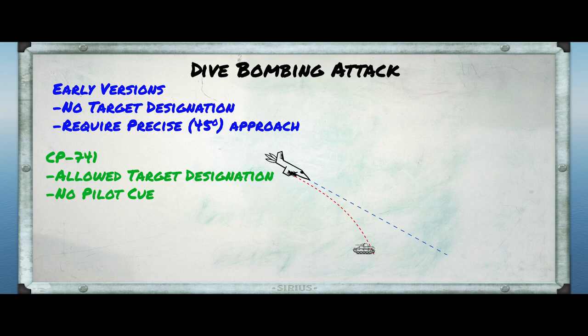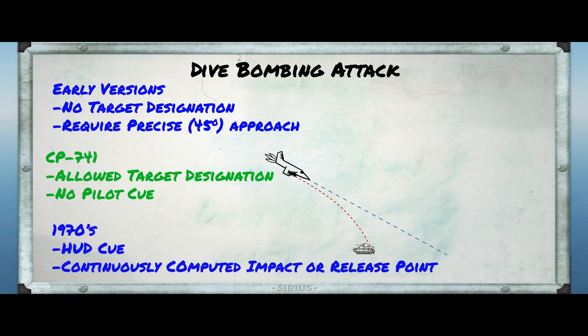The advent of heads-up displays in the late 1960s and 70s provided a chance to use the information being calculated by a computer and provide more insight to the pilot. Ultimately this converged on what we now call either CCIP or CCRP symbology. In fact, the later versions of the A4, particularly the A4M, included a HUD with this symbology.